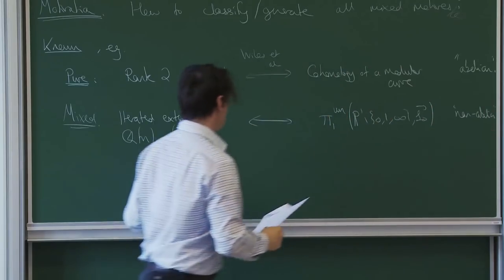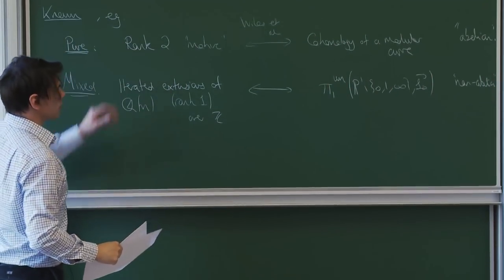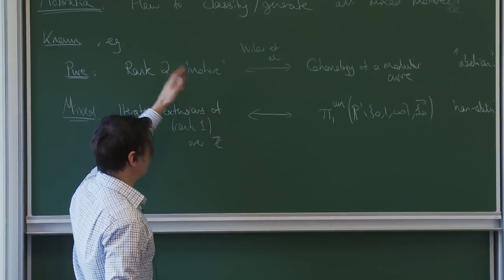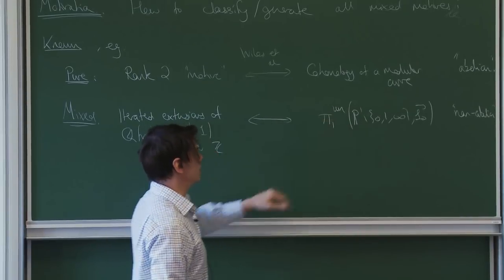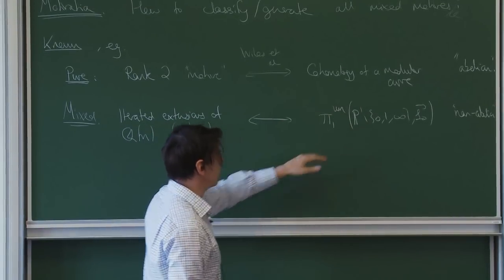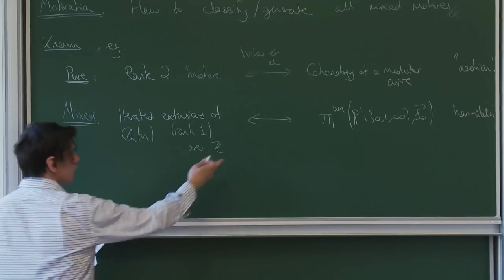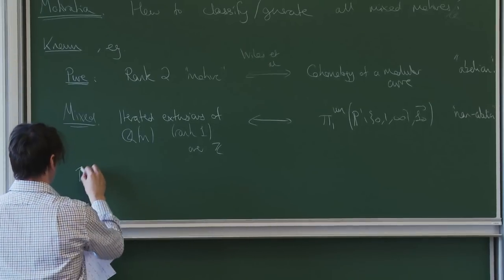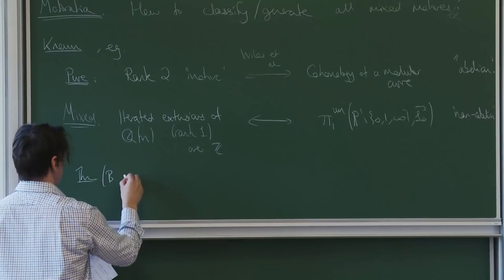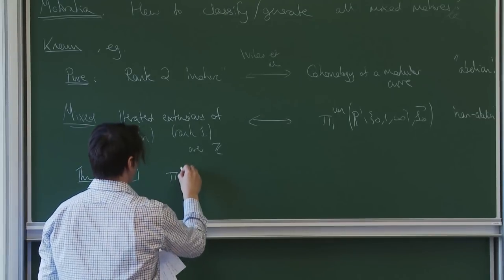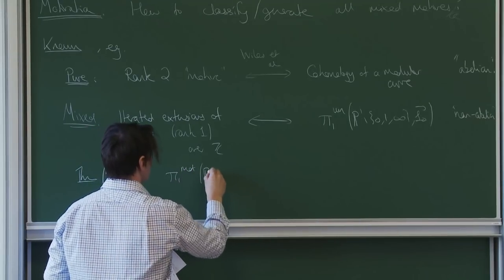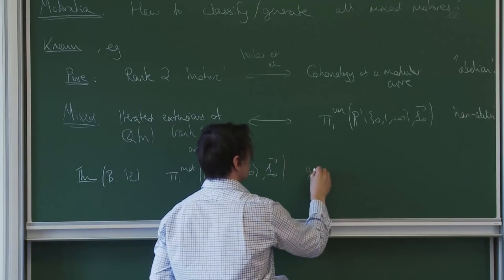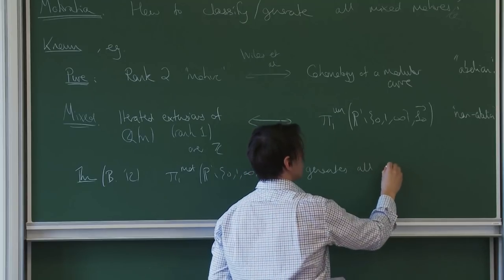The idea is to take the product of these two situations and construct extensions of motives of modular forms by looking at not the cohomology but the fundamental group of modular curves. This theorem — that I proved in 2012 — states that the motivic fundamental group generates all mixed Tate motives over Z.